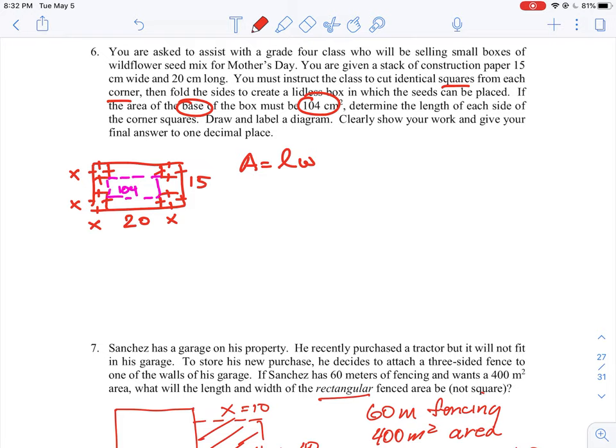So what would the length be in this case? The length would have to be the 20 units minus the 2x because we have x's on both ends. So we take away double that and the width will be similar measurement. It's going to be the 15 minus 2x.